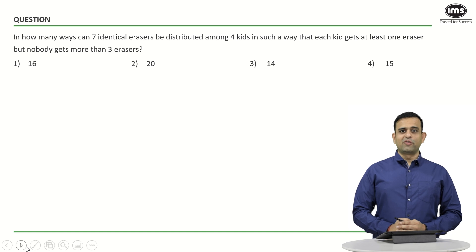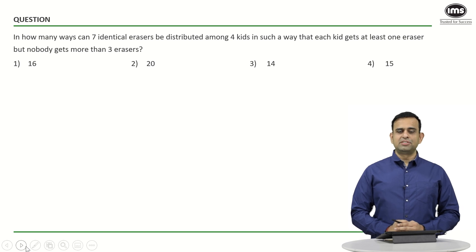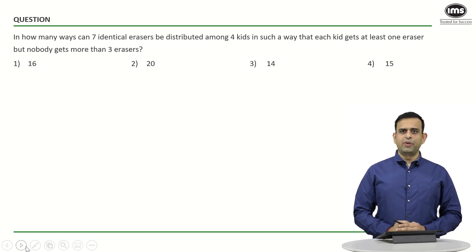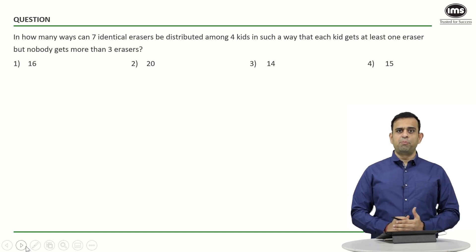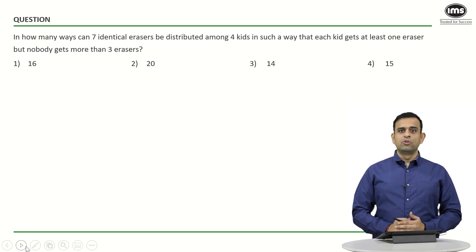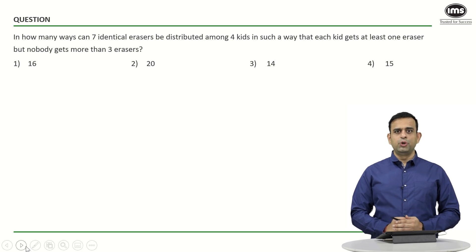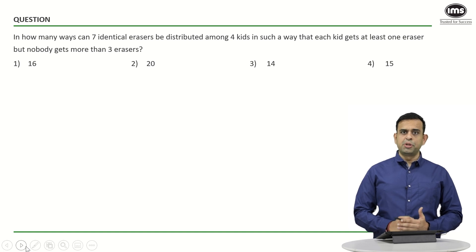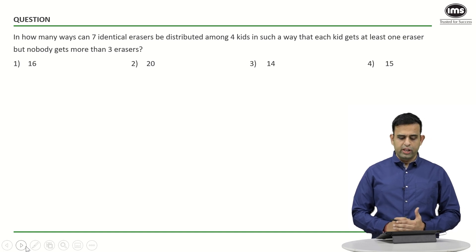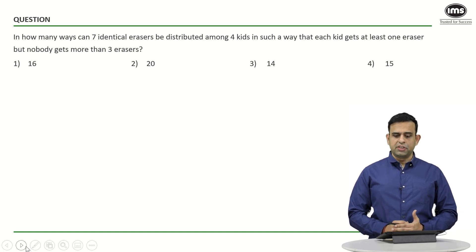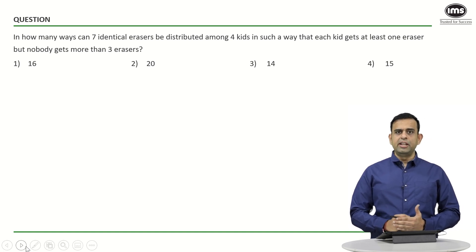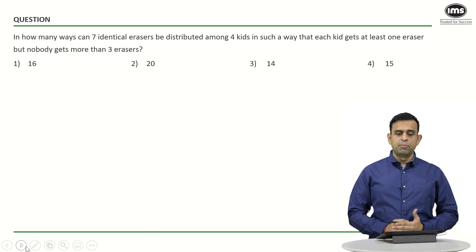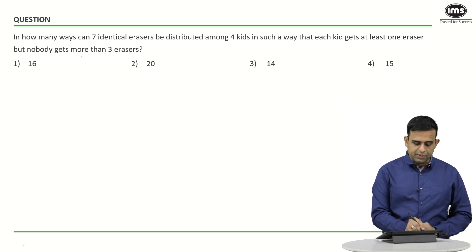Hi all, welcome to Best of Characteristics by IMS. I am Parmesh, and today we'll look at a question on PnC. Kindly solve the sum first and then resume the video. In this particular sum, it is given: in how many ways can seven identical erasers be distributed among four kids such that each kid gets at least one eraser but not more than three erasers?